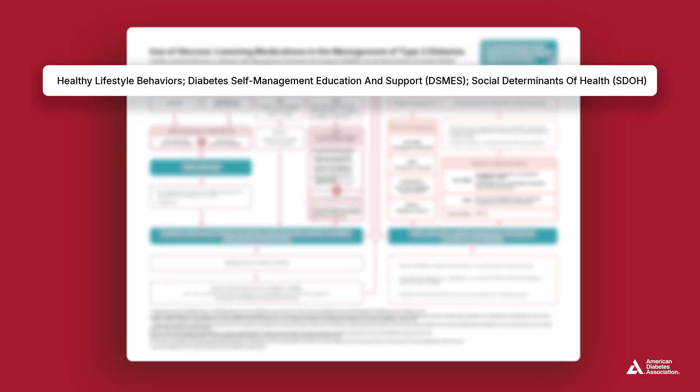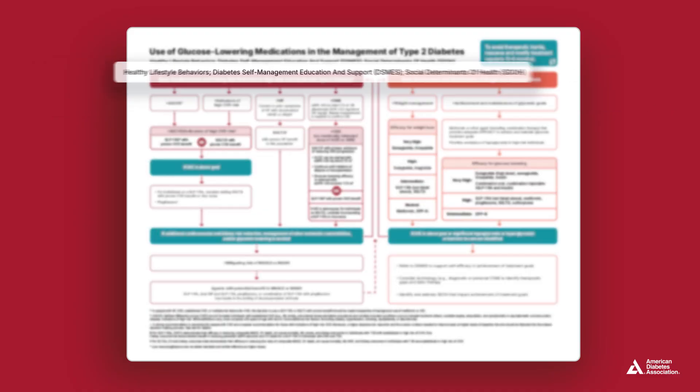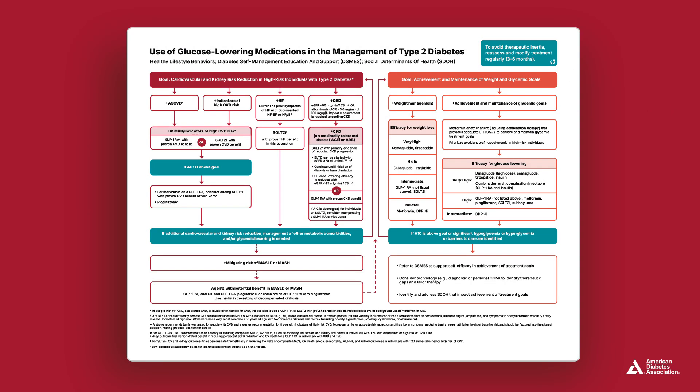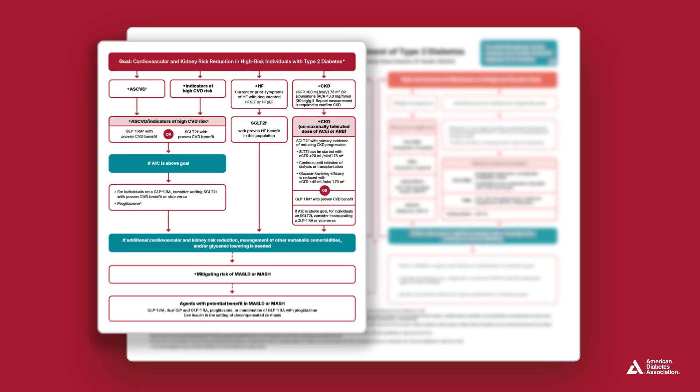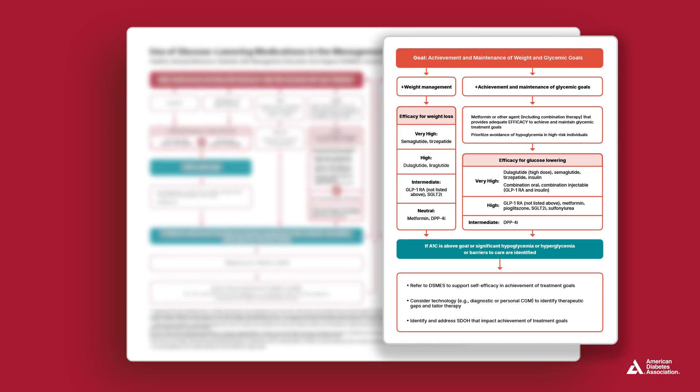Likewise, the top of the chart serves as a reminder of the foundational approaches for treating people with type 2 diabetes, including understanding and addressing social determinants of health. To guide your treatment, the algorithm is divided into two actual priorities. The first is cardio-renal risk reduction and comprehensive cardiovascular management in high-risk individuals with type 2 diabetes. The second part focuses on glycemic management through both glucose-lowering and weight management approaches.